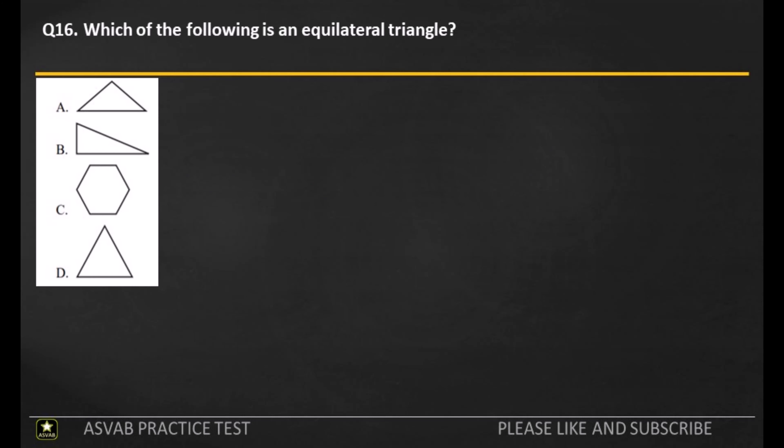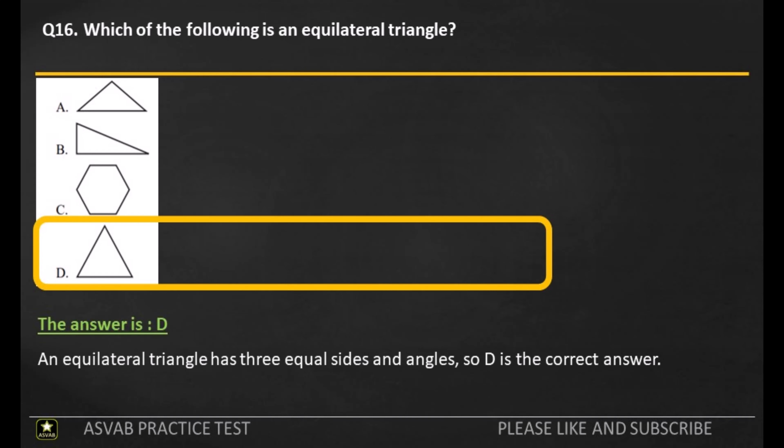Q16. Which of the following is an equilateral triangle? A. B. C. D. The answer is D. An equilateral triangle has three equal sides and angles, so D is the correct answer.